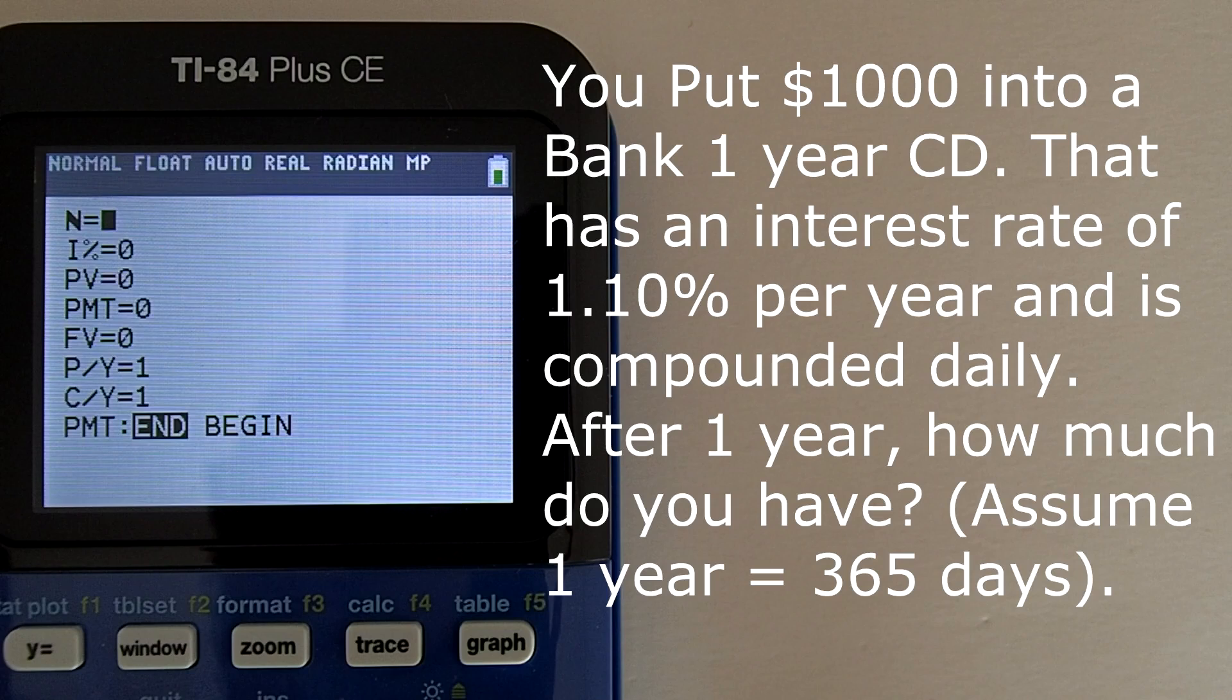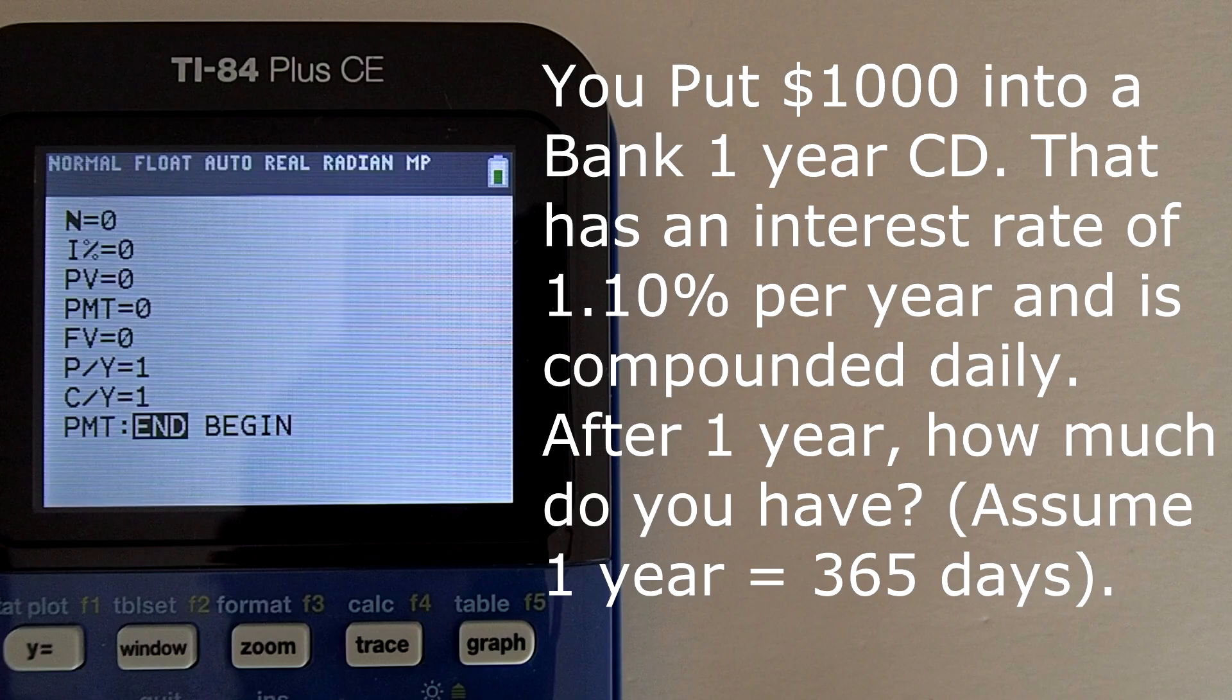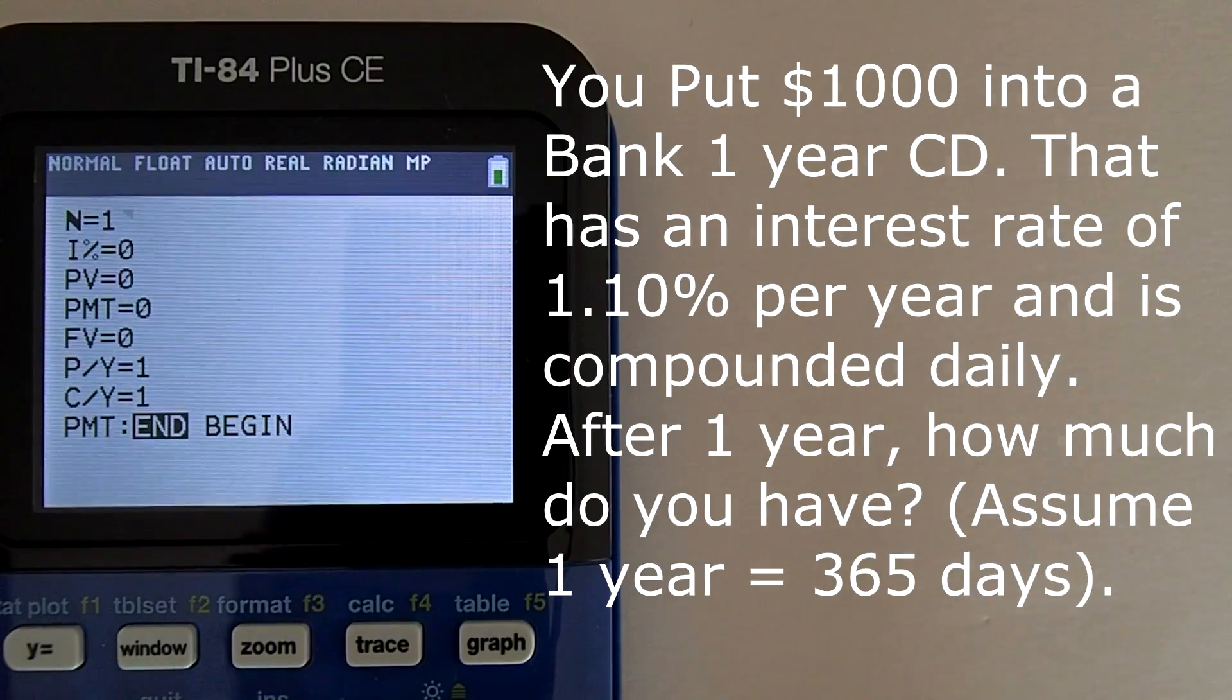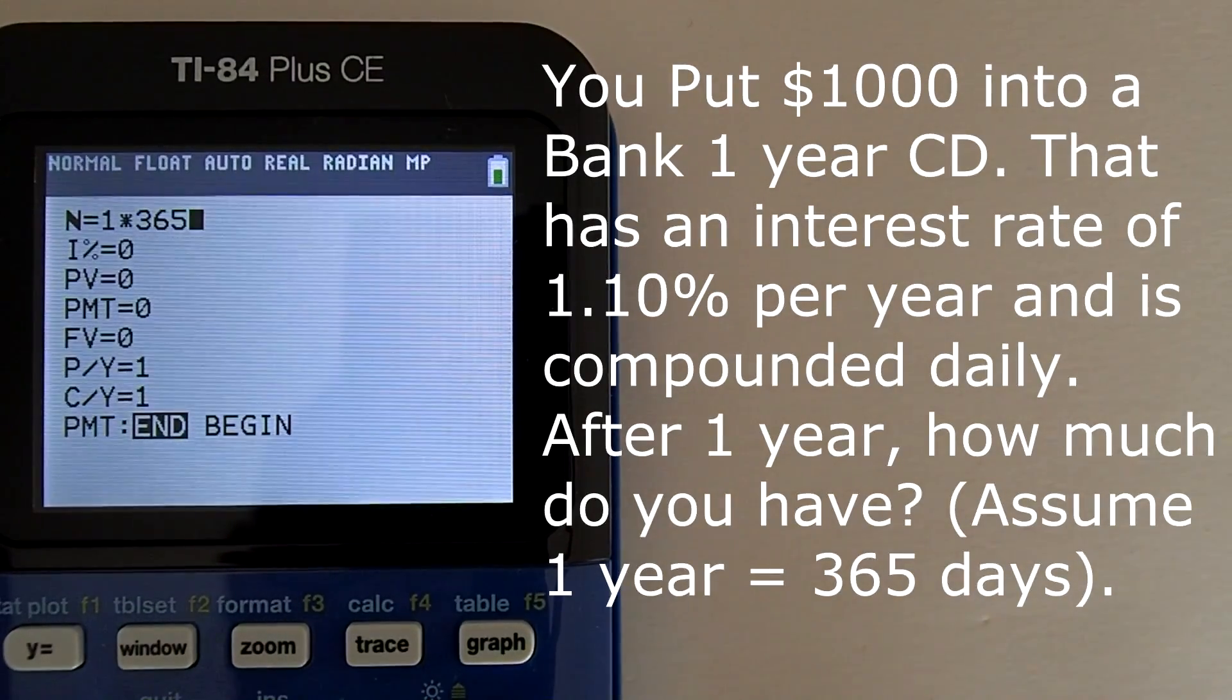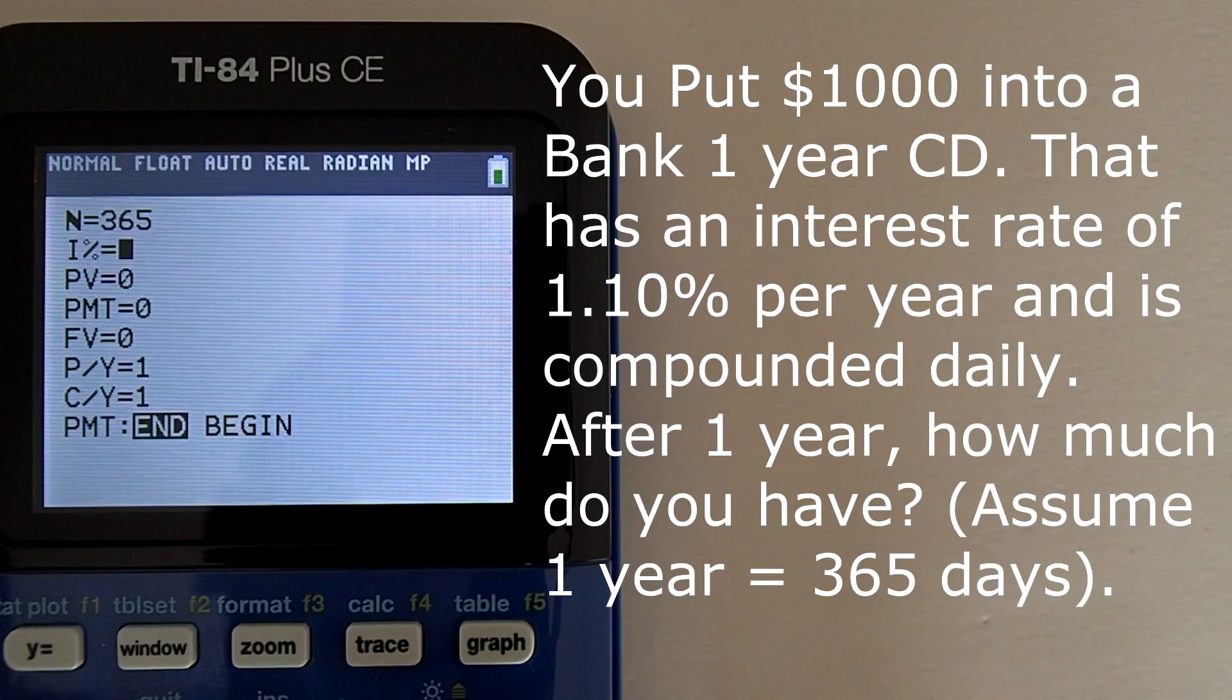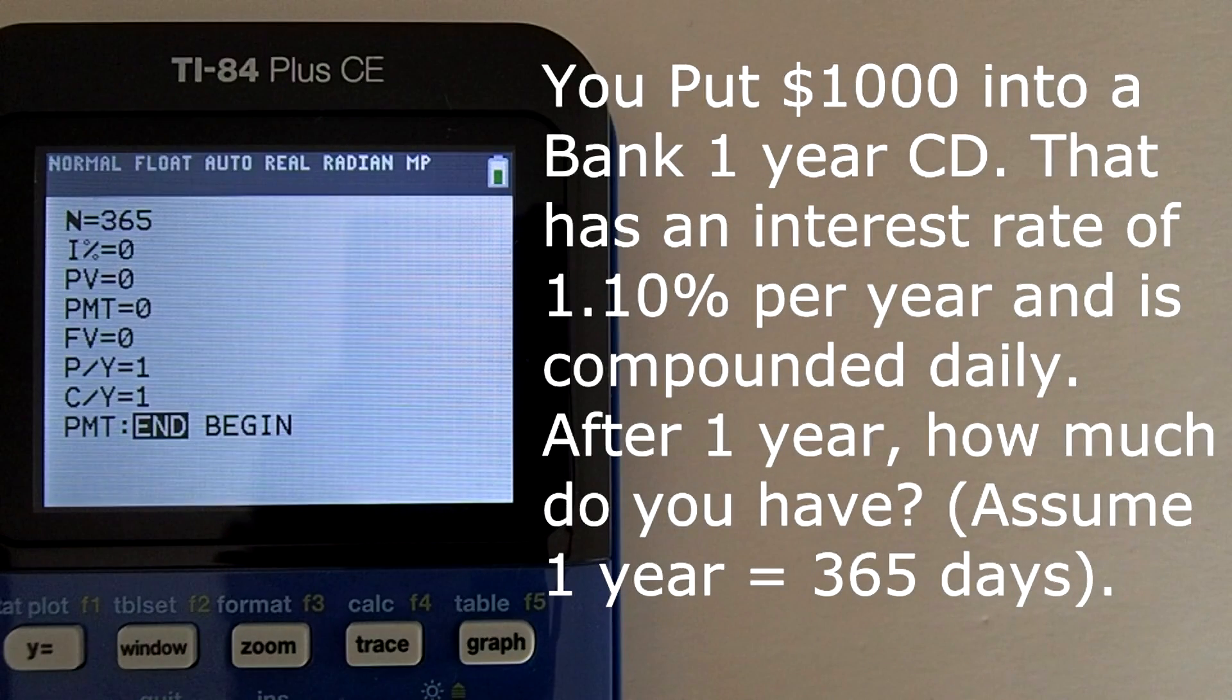For N, number of periods, we have a total time frame of one year, and the compoundings is 365 within that one year. Thus enter 1 for one year, times 365 for the compoundings per year. Thus N will equal 365 for this problem.